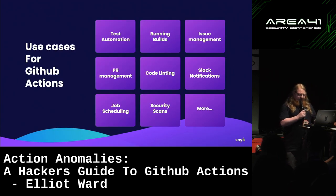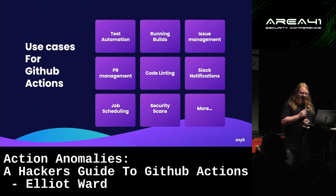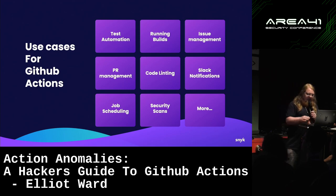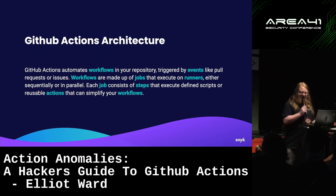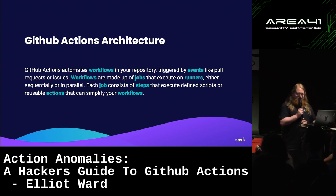Why use GitHub Actions or CI/CD platforms at all? They allow us to easily integrate into that typical git workflow. This lets us do lots of things throughout the lifecycle: run tests or security tests during a pull request before merging, build artifacts once merged into main, then deploy to an upstream system. GitHub Actions automates workflows triggered by events such as pull requests or issue creation, and these workflows are made up of jobs that execute on runners either sequentially or in parallel.